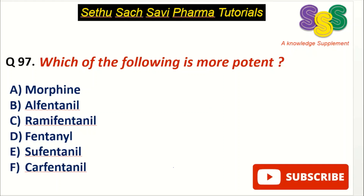Hello everyone, welcome back to the case answer discussion session. Today's question is: which of the following is more potent? Choice A: Morphine, B: Alfentanil, C: Remifentanil, D: Fentanyl, E: Sufentanil, and F: Carfentanil.